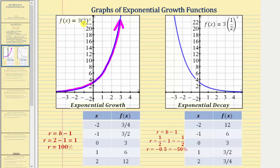Because the base b equals one plus r, it's also true that r, the growth rate, equals b minus one. Here b is equal to two, so r equals two minus one, or one. A growth rate of 100% means we have the doubling function. Looking at the table of values, we can see that as x increases by one, f of x doubles.